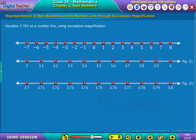now we can visualize through the magnifying glass that 3.765 lies in between 3.76 and 3.77.